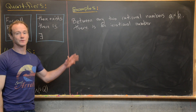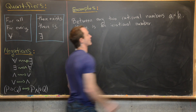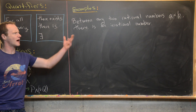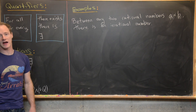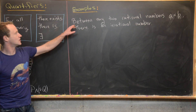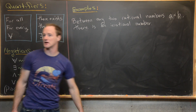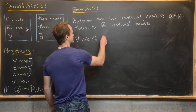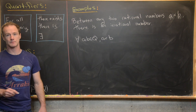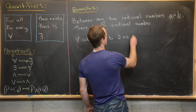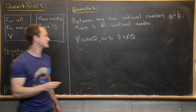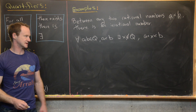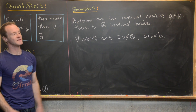Next we want to look at a statement equivalent to showing that the irrational numbers are dense in the real numbers. Between any two rational numbers A and B, where A is less than B, there is an irrational number. Notice 'any two rational numbers' is really a for all statement. So in symbolic logic: for all A and B in the rationals satisfying A < B, there exists an irrational number X — written as X not in the rationals — such that A < X < B.